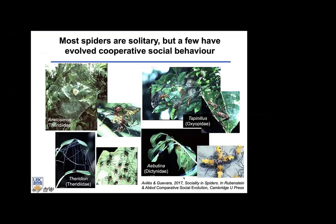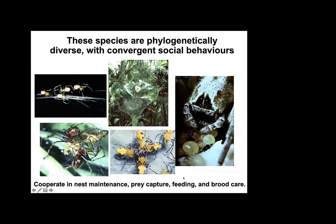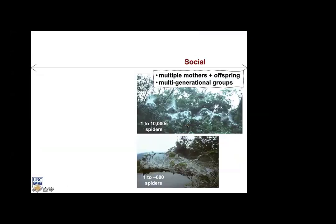As you know, most spiders are solitary, but a few have evolved cooperative social behavior. These species are phylogenetically diverse with convergent social behaviors, which include cooperation in building and maintaining a communal web, cooperation in prey-capture, feeding, and communal brood care.